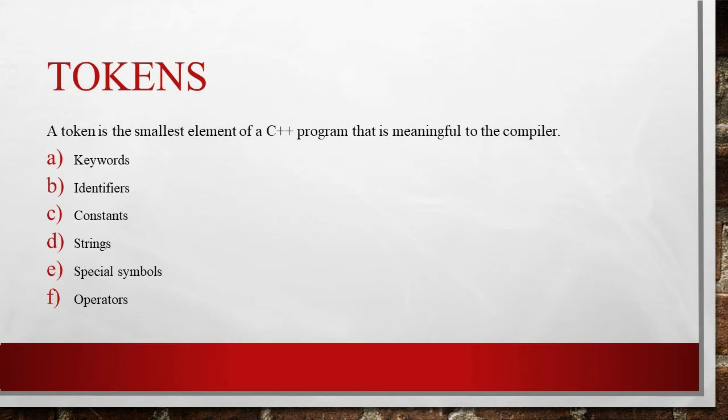C++ tokens include keywords, identifiers, constants, strings, and operators. A C++ program is written using these tokens, white spaces, and the syntax of the language. Most C++ tokens are similar to C tokens with some additions and minor modifications.